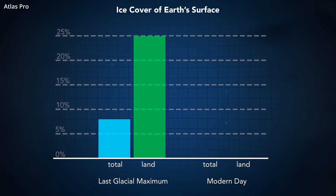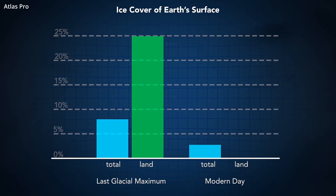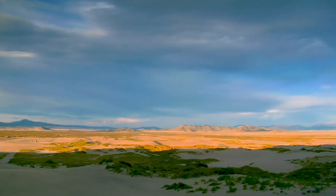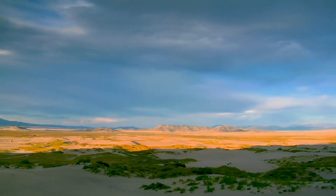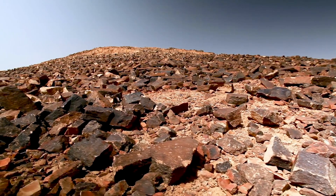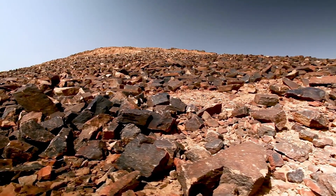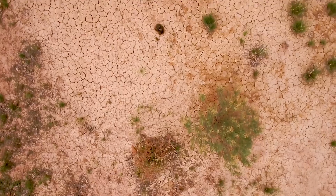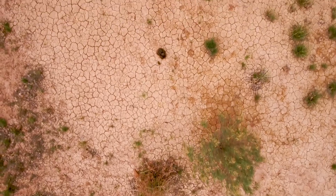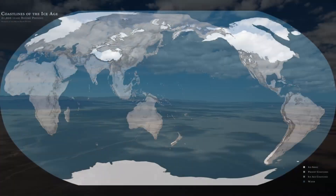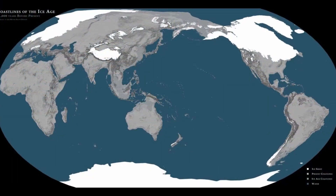At the last glacial maximum, glaciers covered approximately 8% of Earth's surface and 25% of Earth's land area. Today glaciers cover approximately 3% of Earth's surface and 11% of Earth's land area. Ice Age conditions were also drier than today. Because most of the water on Earth's surface was ice, there was little precipitation — rainfall was about half of current levels. The sea level was much lower and shorelines were typically much farther out, because glaciation trapped water in ice sheets.